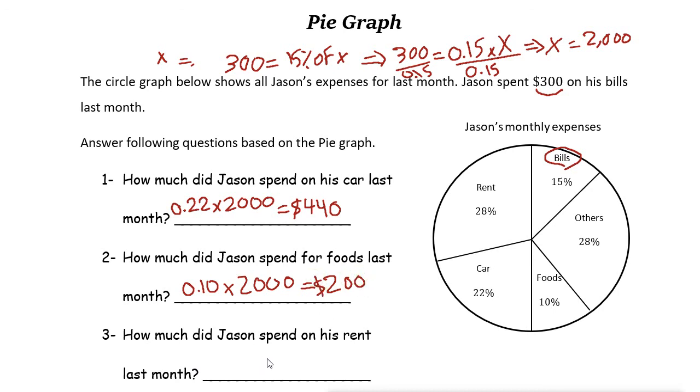Next one. For rent. Now we are looking for rent. And rent is 28 percent. So it is 0.28 times 2000. Use a calculator. And the answer is $560.